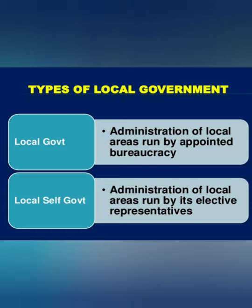Now I will tell you about the types of local government: local government and local self-government. What is the difference between them? In a local government, administration is appointed, and in local self-government, people elect administration directly with their vote. Local government is the administration of local areas run by appointed bureaucracy, and local self-government is the administration of local areas run by its elected representatives.